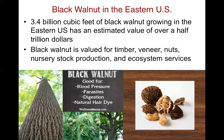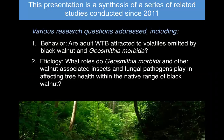Black walnut is an important timber species in the east, with about 3.4 billion cubic feet growing there and an estimated value of over half a trillion dollars. It's valued for timber, veneer, and nuts. It's important in nursery stock production and also has ecosystem services as well as some health benefits. For example, black walnut has been associated with a decrease in blood pressure, it helps with digestion, and apparently is a good natural hair dye — though I can tell you it'll certainly stain your hands.